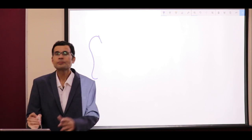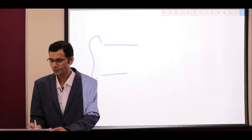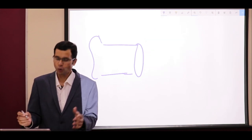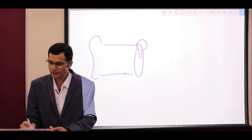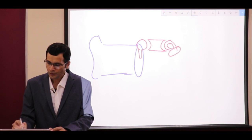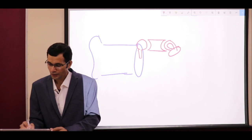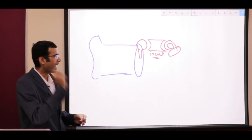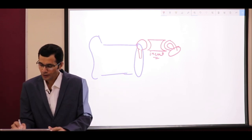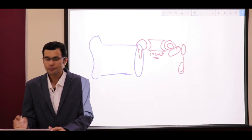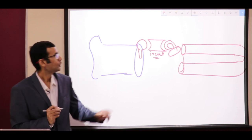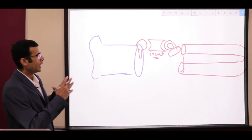Our auditory apparatus has the external ear, then the middle ear with these structures: the tympanic membrane and a chain of ossicles — the malleus, the incus, and the stapes. The malleus has a handle, the incus has the shape of an anvil, and the stapes has a footplate. This footplate faces the oval window of the inner ear — the cochlea — which contains the organ for transduction of sound.